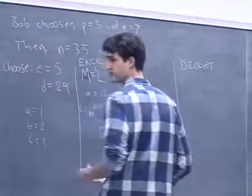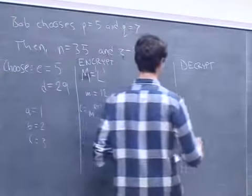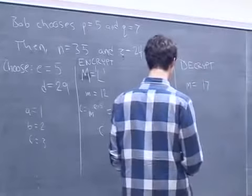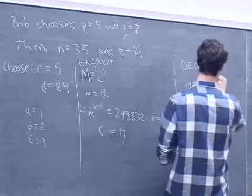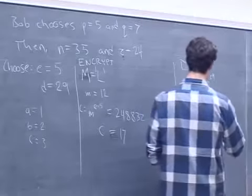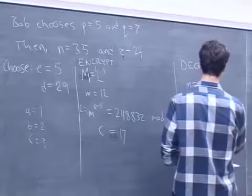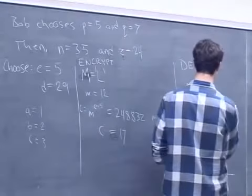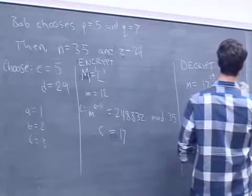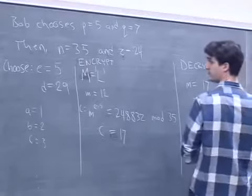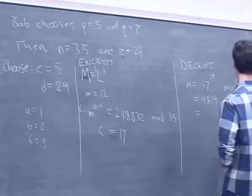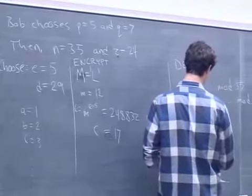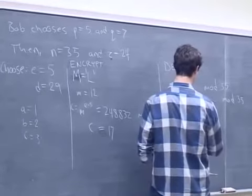To decrypt, we follow the decryption step: take the received value 17 and raise it to d = 29. That's a pretty large number — you can plug it into a calculator. Then we take that mod n = 35, and we get 12, which corresponds to the letter L — our original message.